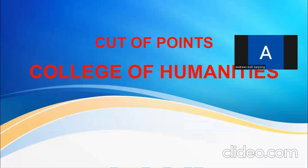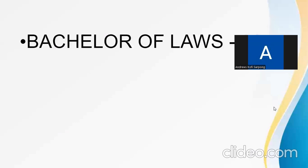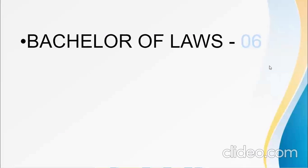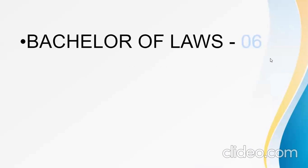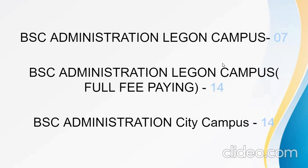Stay informed and follow reliable news sources. Now let's get to the cut-off points, starting with the College of Humanities. The first on our list is BSc Laws with an aggregate of 6. Next is BSc Administration, Legon Campus, which is aggregate 7. BSc Administration, Legon Campus, full fee-paying is 14.